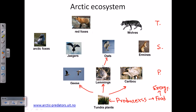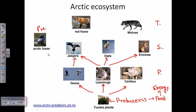Owls can feed onto lemmings, and ermines can also feed onto lemmings. Jaegers are also secondary predators — they will take geese and lemmings. Arctic fox is placed at the tertiary level consumer, the highest predator level consumer; they will take geese and lemmings and almost everything present there.